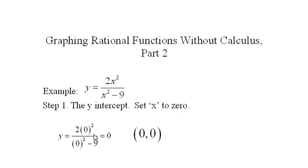We do that by setting x to 0, and here I've done that. Of course, y equals 0 when we do that because we have 0 on the top. So we found both an x-intercept and a y-intercept at the same time.